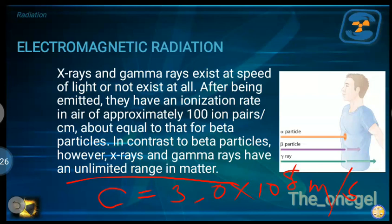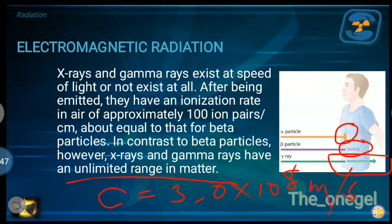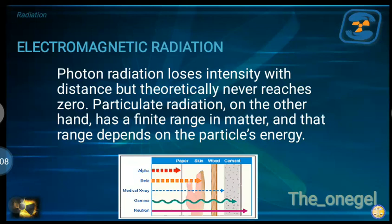Comparing penetration: alpha particles travel less than 100 micrometers in soft tissue; beta particles penetrate 0 to 2 centimeters in soft tissue; while x-rays and gamma rays can penetrate much further, depending on the kVp applied. Photon radiation loses intensity with distance but theoretically never reaches zero — similar to the concept of half-life. Particulate radiation, on the other hand, has a finite range in matter, and that range depends on the particle's energy.